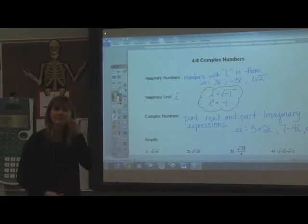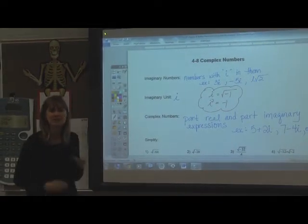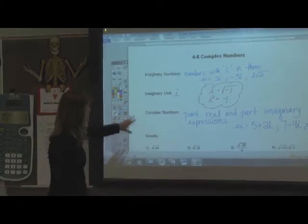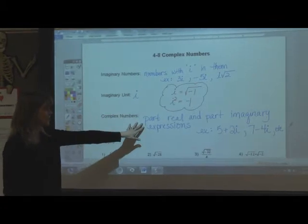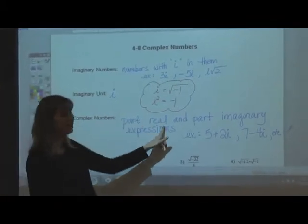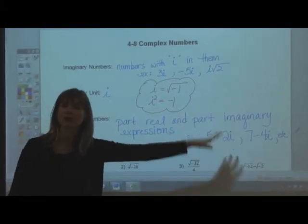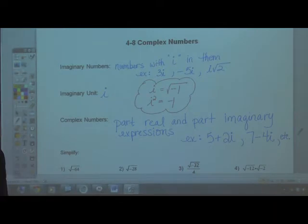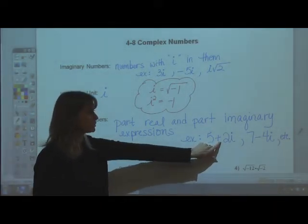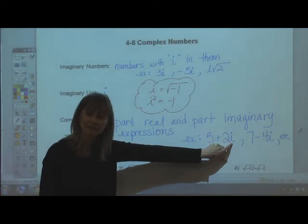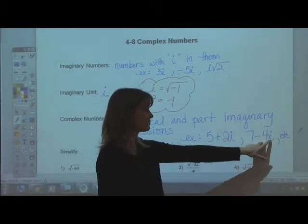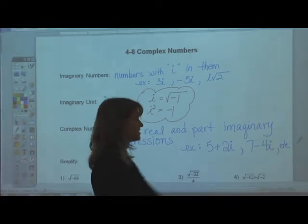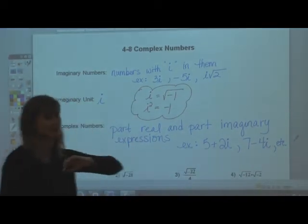Let's start off — we're going to talk about complex numbers. Complex numbers have imaginary numbers, imaginary units, and complex numbers are actually part real and part imaginary expressions. For example, you can see 5 plus 2i, where i is the imaginary unit, 7 minus 4i — that's an imaginary unit — and you can also have radicals with these.